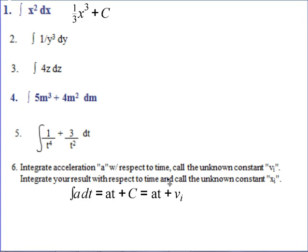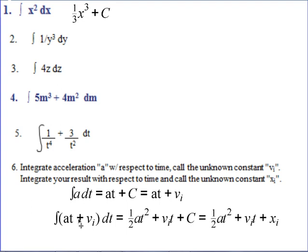Now integrate that result again with respect to time and call the unknown constant x-sub-i. You take a·t and integrate: t to the 1 becomes t squared with one-half out in front; v-i becomes v-i times time; and there's a constant x-sub-i. So x-final equals x-initial plus v-i·t plus one-half a·t squared. And that is why that is the formula for position when there is acceleration present.